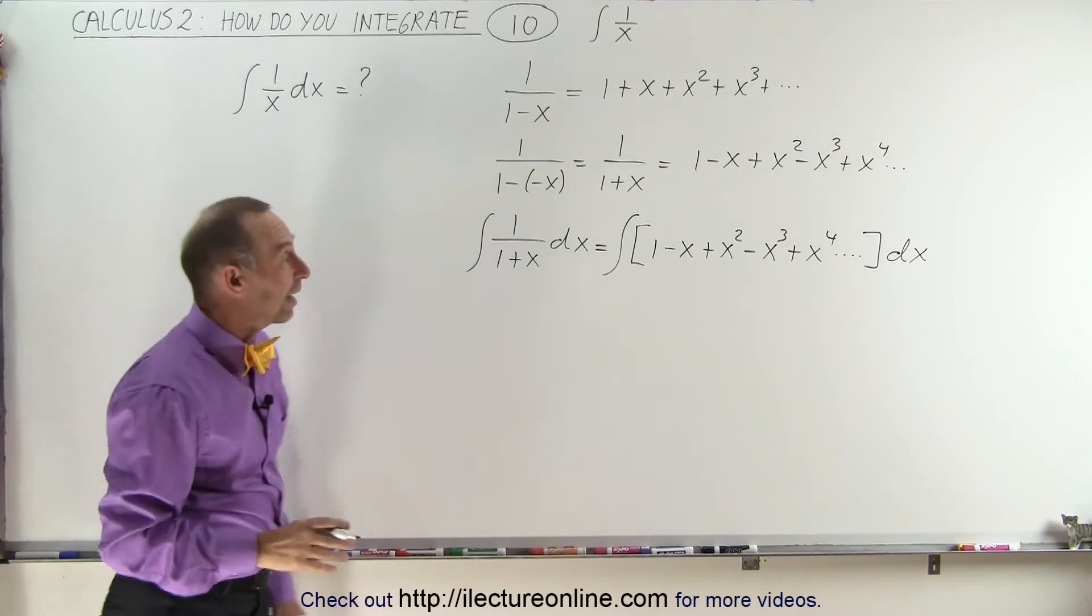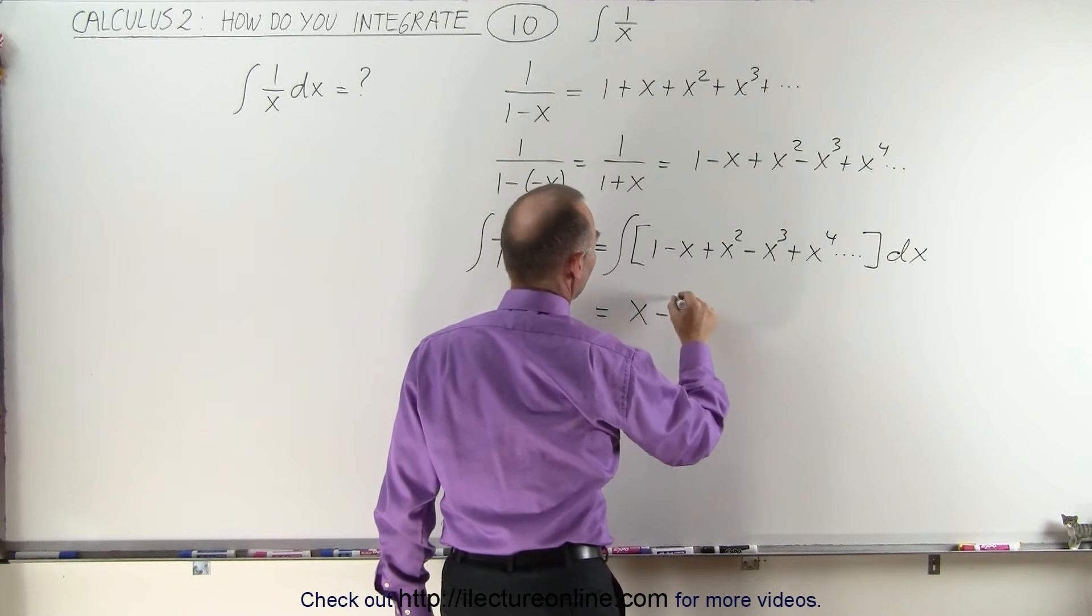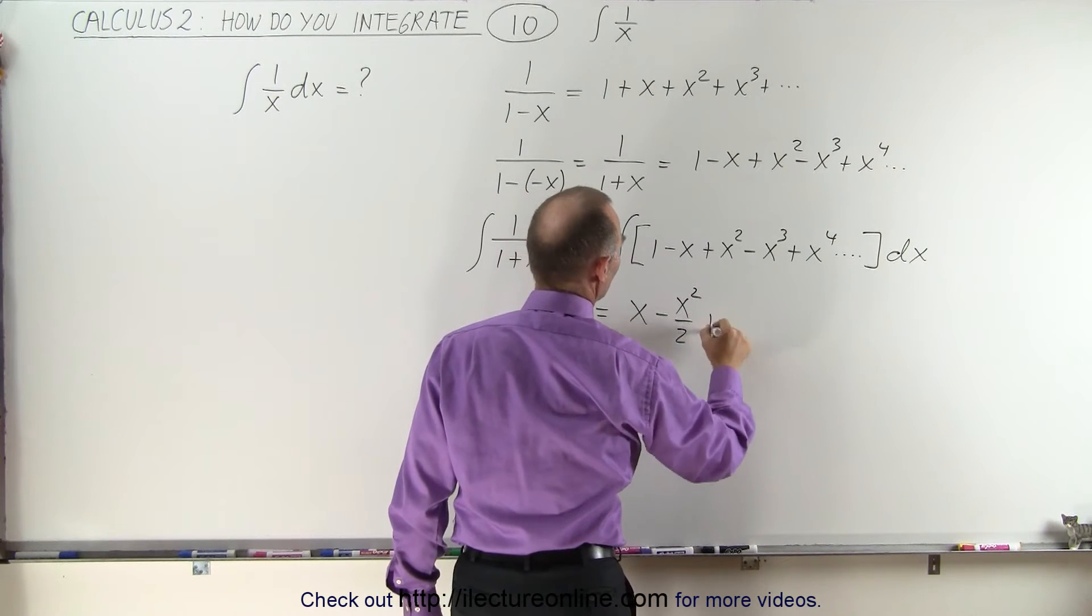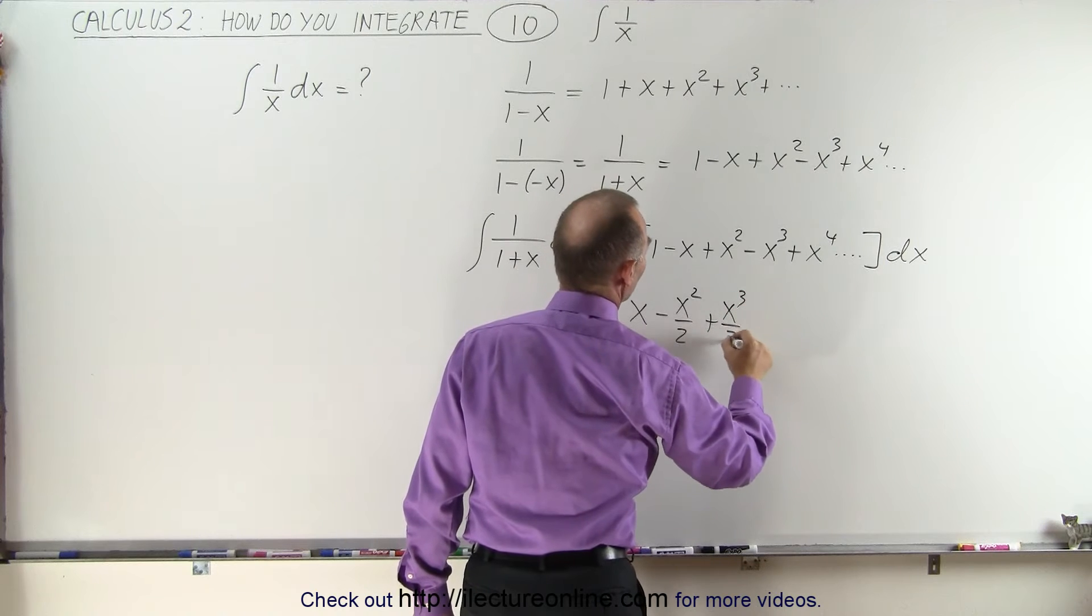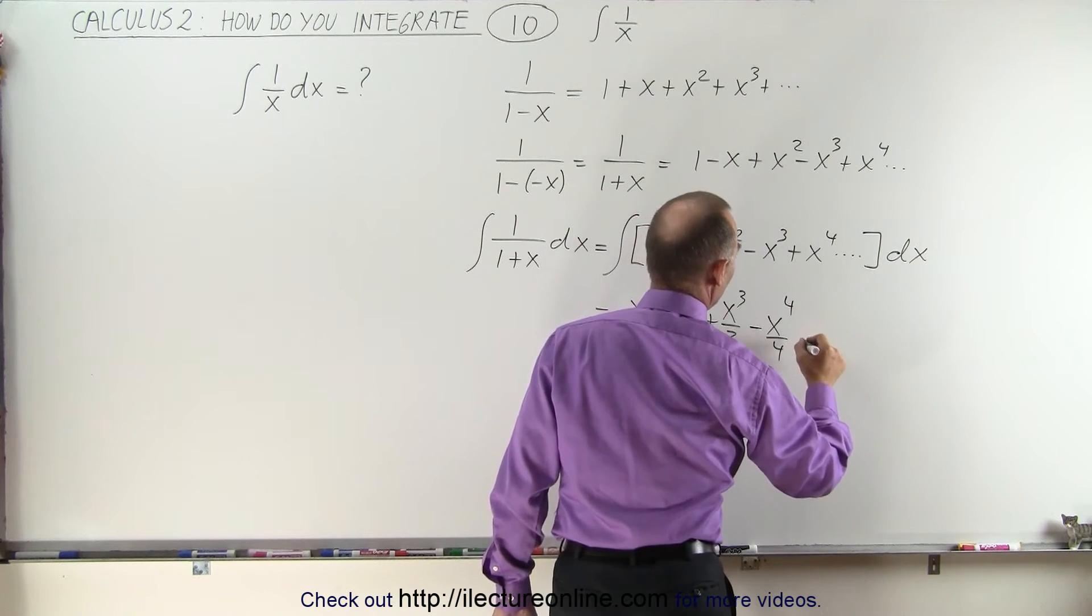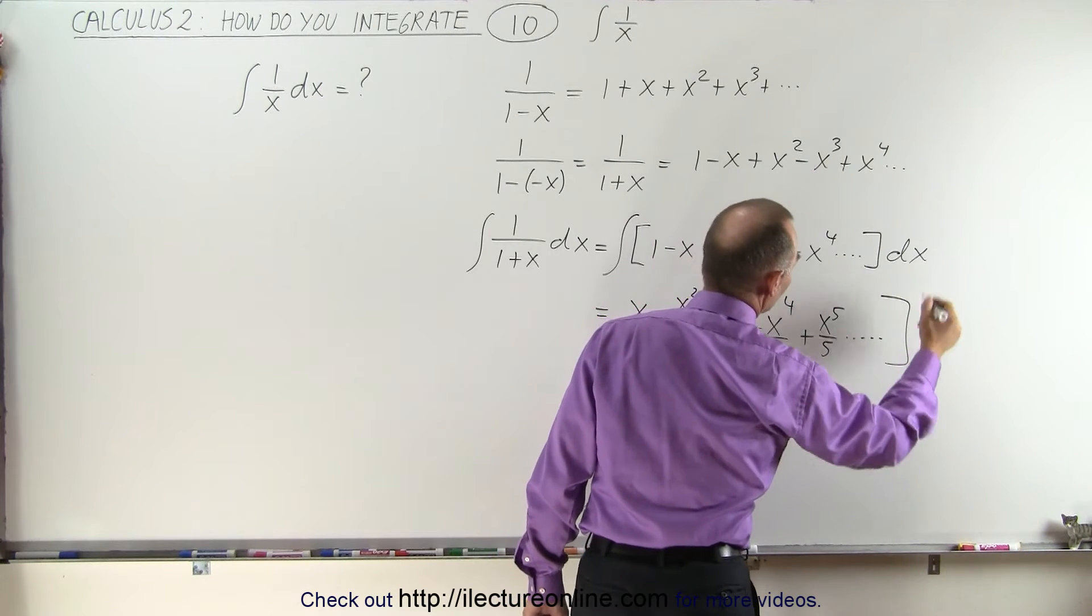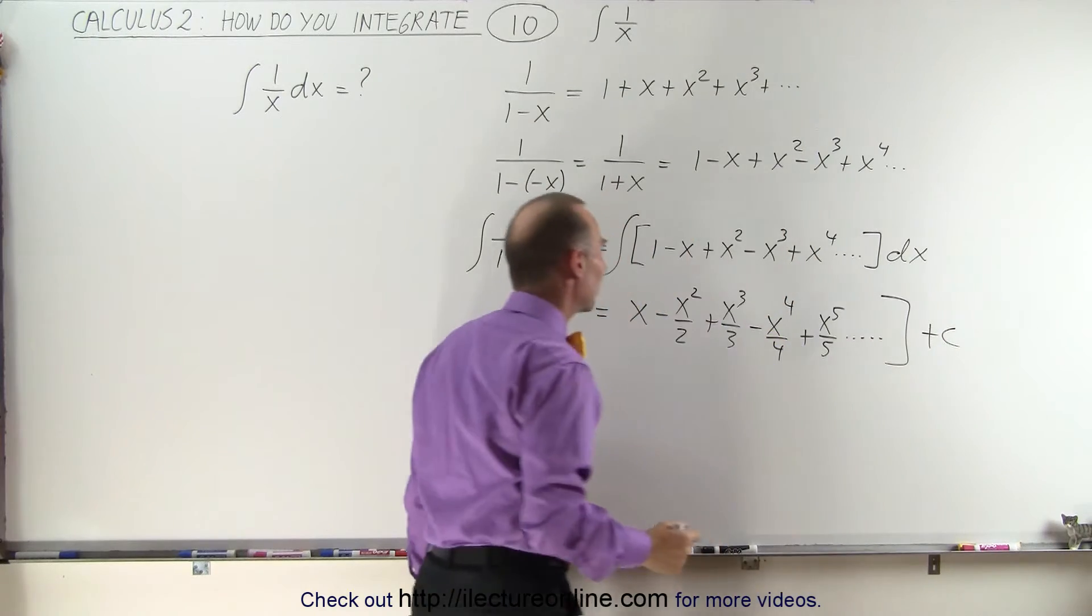So when we do that, on the right side, that's an easy integral. This is equal to x minus x squared over 2 plus x cubed over 3 minus x to the fourth over 4, and that would be plus x to the fifth over 5. And you can see the pattern, of course we still have a constant of integration.